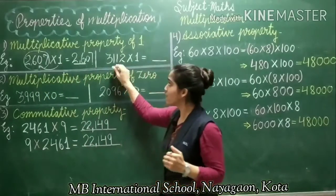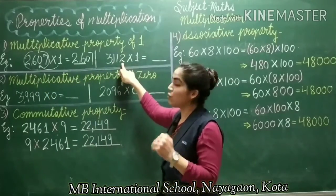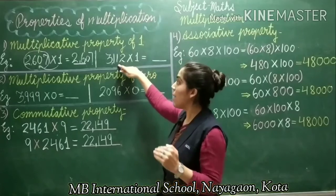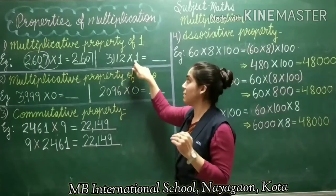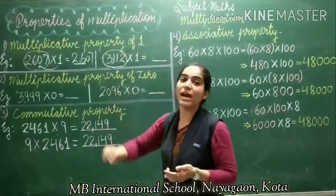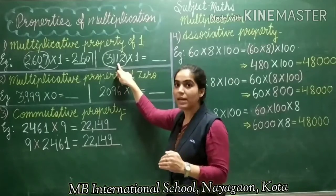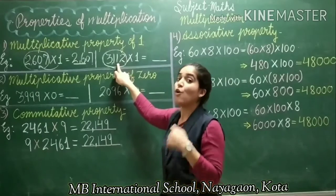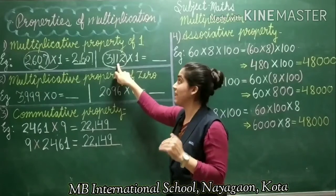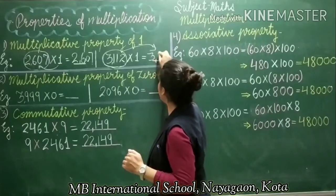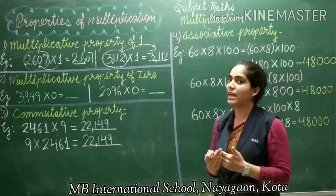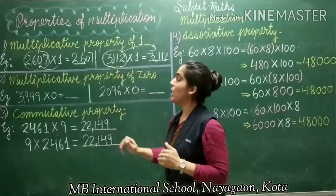The next example is 3,112. Here, I am going to apply the same property. I am going to multiply 3,112 by 1. After multiplying, I will get the same number as the product, because the multiplicative property of 1 says whenever we multiply any number by 1, we get the number itself.